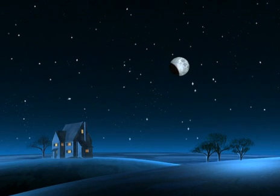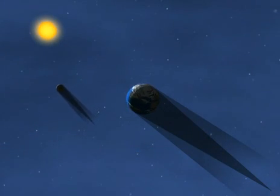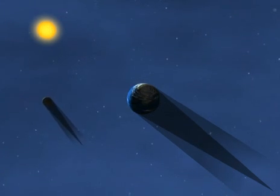Eclipses of the Moon take place two weeks before or after solar eclipses. After eclipsing the Sun, the Moon circles the Earth.